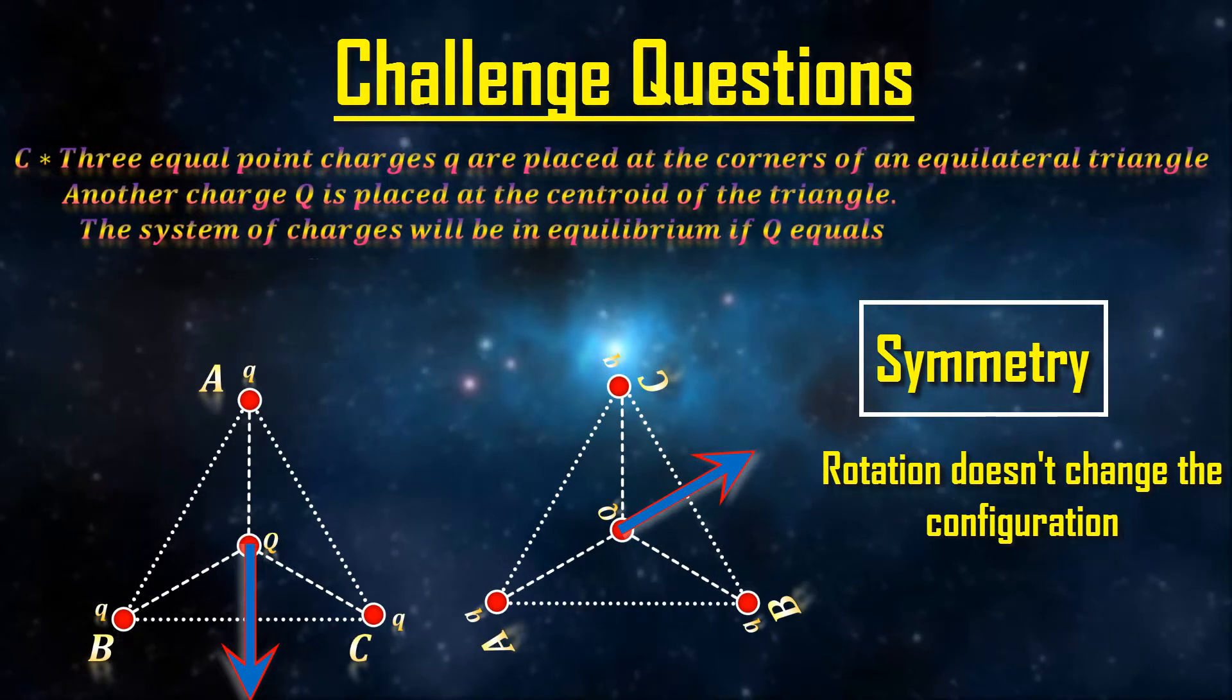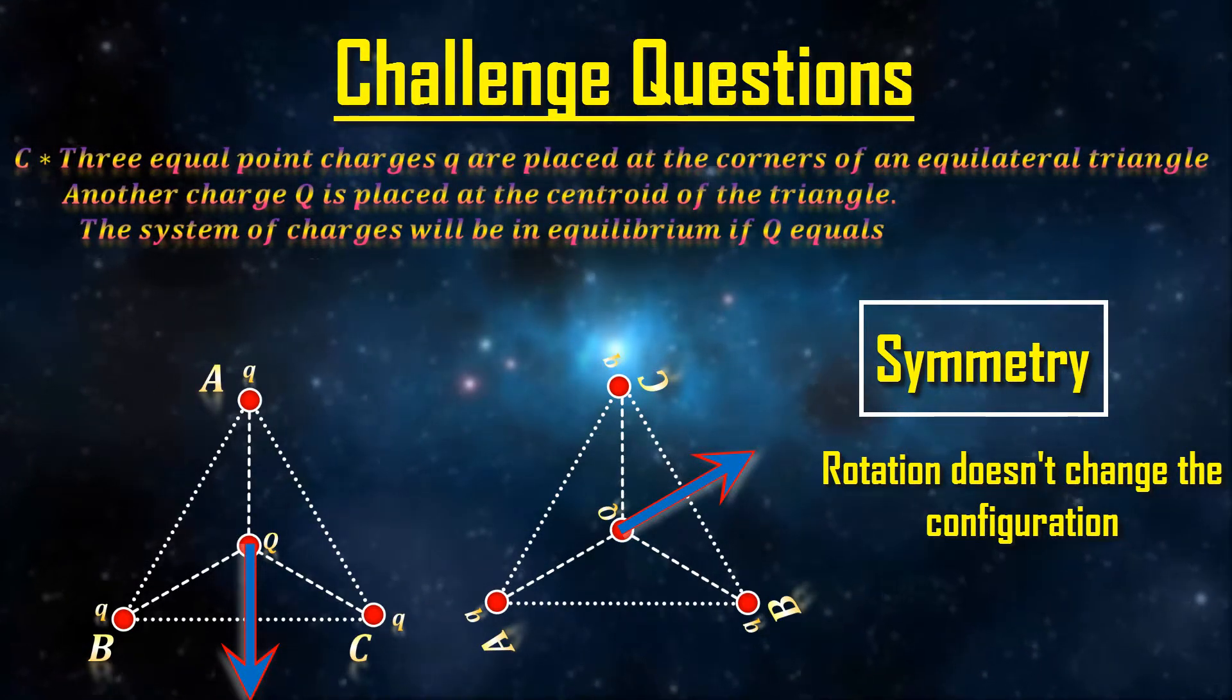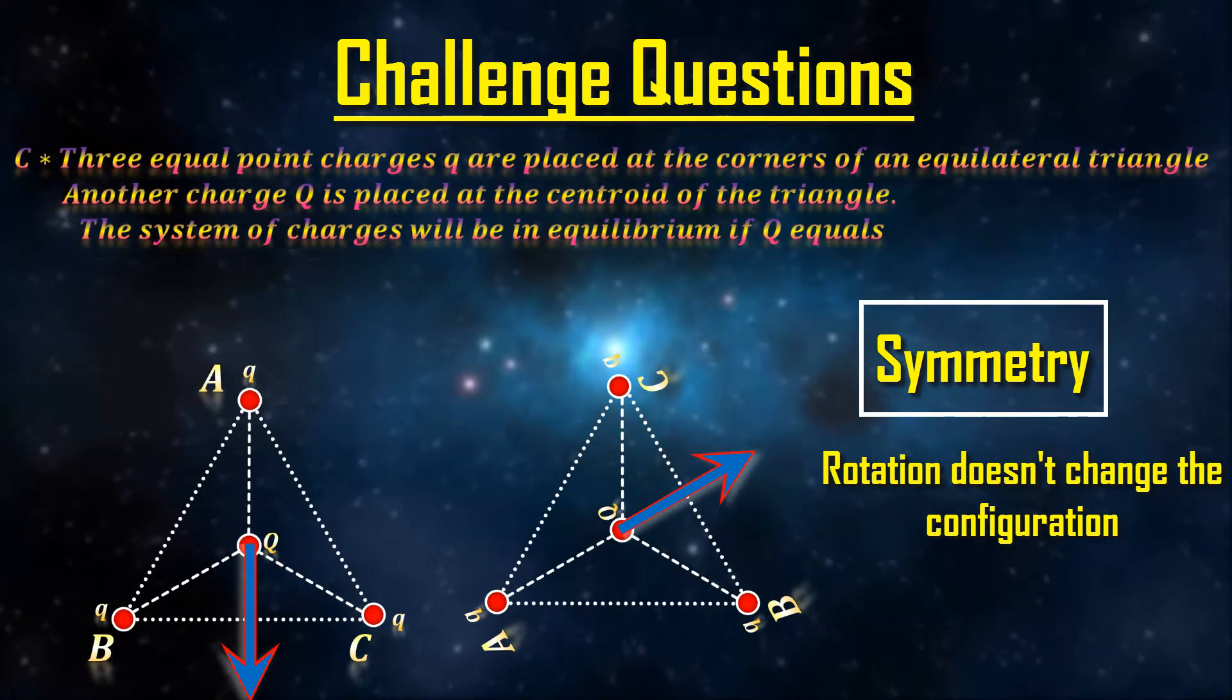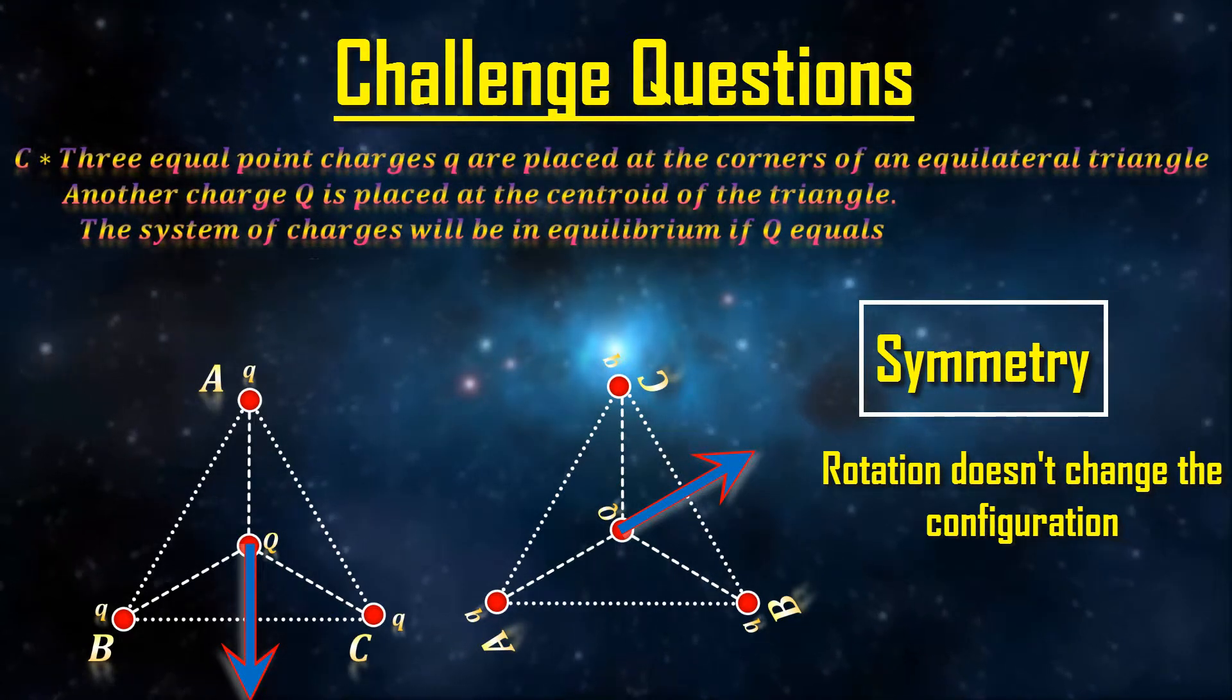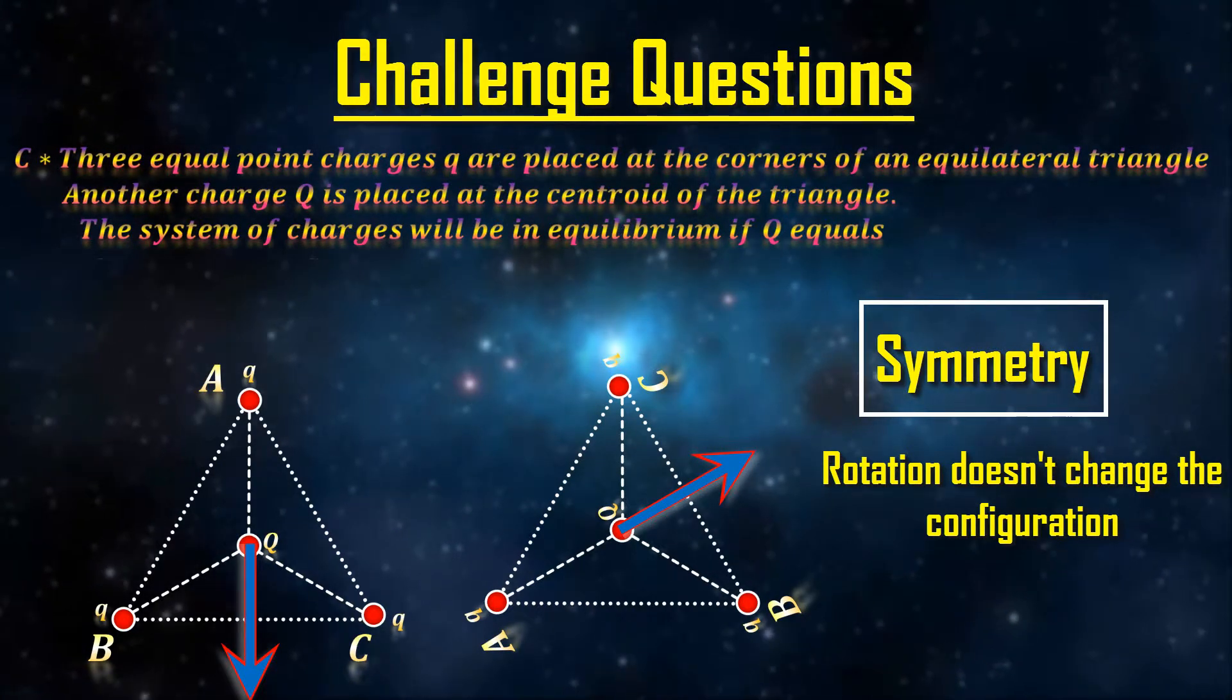However, now the force is directed somewhere towards the right. How can both pictures be correct? The force must be in one direction. Therefore, there is only one solution. The only way the two pictures can be right is if the force is zero.